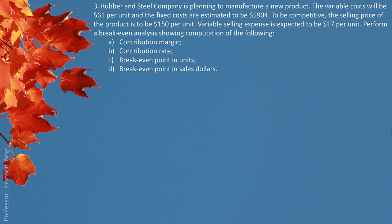Question 3. Rubber and Steel Company is planning to manufacture a new product. The variable cost will be $61 per unit, and the fixed costs are estimated to be $5,904. To be competitive, the selling price is set at $150 per unit. A variable selling expense is expected to be $17 per unit. Perform a break-even analysis computing: contribution margin, contribution rate, break-even point in units, and break-even point in sales dollars.